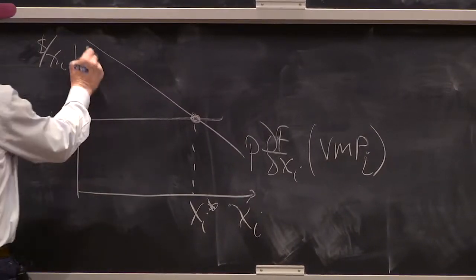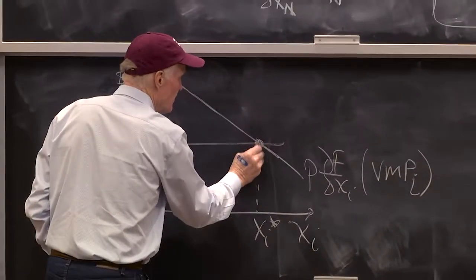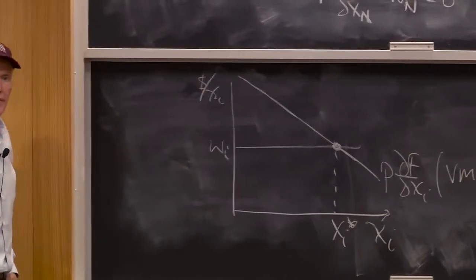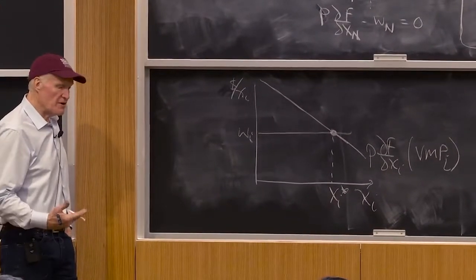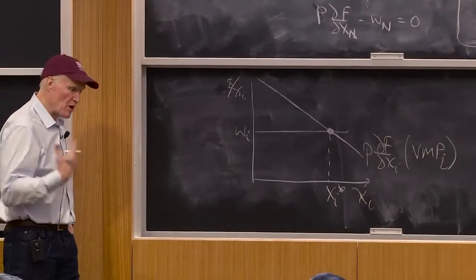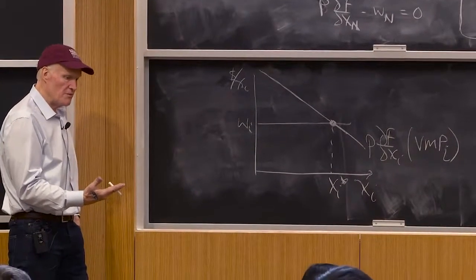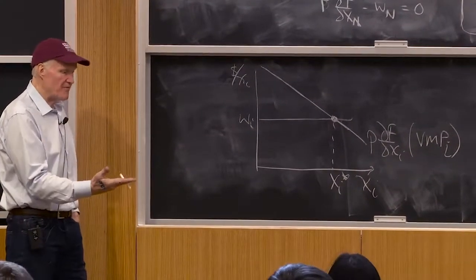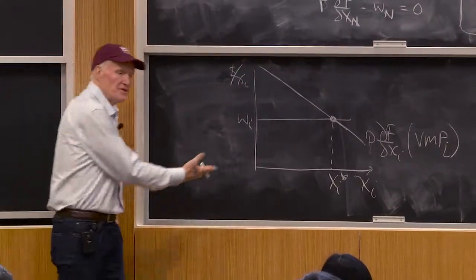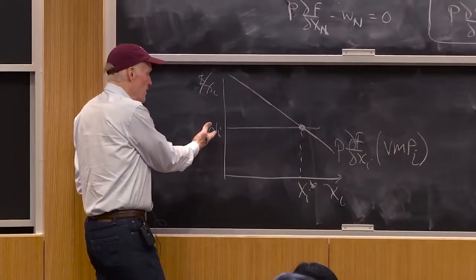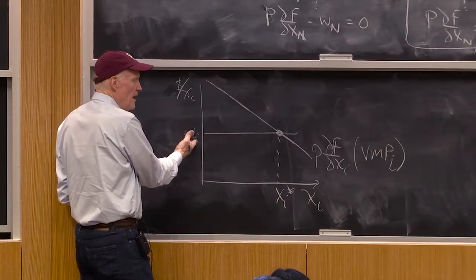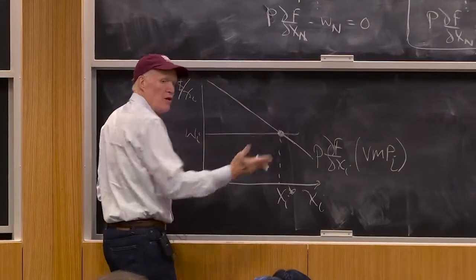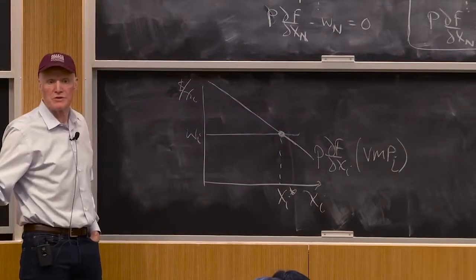And you would say, well, I equate the value marginal product equal to the wage rate of that factor, right? And just like we talked about in the consumer side, we said the prices of the goods he buys in equilibrium have to be equal to their value. The same is true here. The price that they're paying for this input in equilibrium, wi, has to be equal to the value on the margin that that input produces.